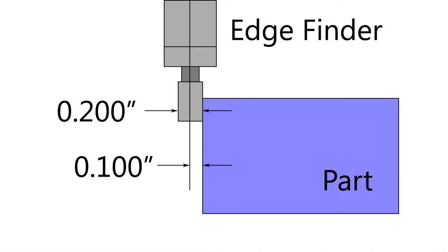The tip of the edge finder has a diameter of 200 thousandths. As a result, when the edge finder touches the part, there is a 100 thousandths offset between the center line of the spindle and the edge of the part.